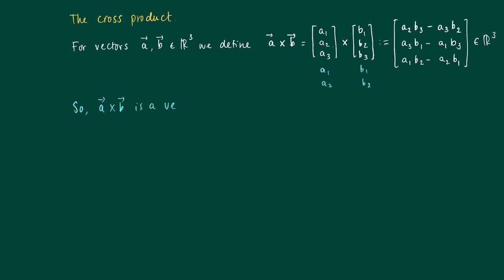So we see that opposed to the dot product of two vectors, the cross product is actually a vector in R3. So this is completely different.